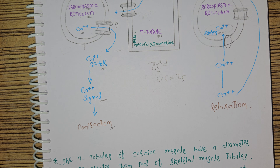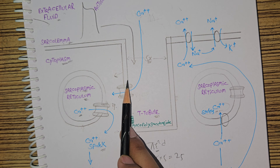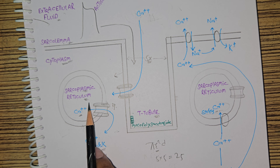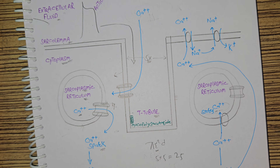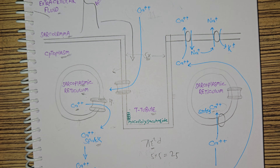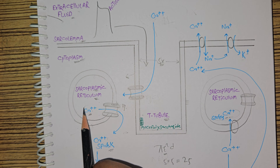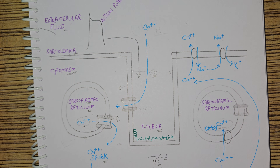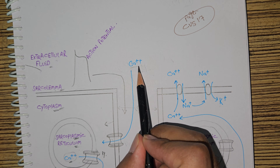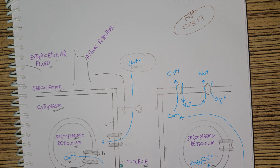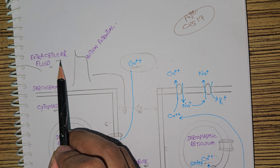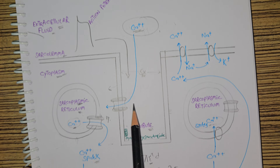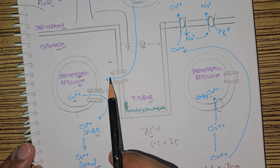So far, this is exactly what also happens in a skeletal muscle cell: action potential comes, it signals the sarcoplasmic reticulum, it releases calcium, and calcium causes contraction. This happens in both cardiac and skeletal muscle cells. But in addition to this calcium from the sarcoplasmic reticulum, there is another calcium that comes from the extracellular fluid.